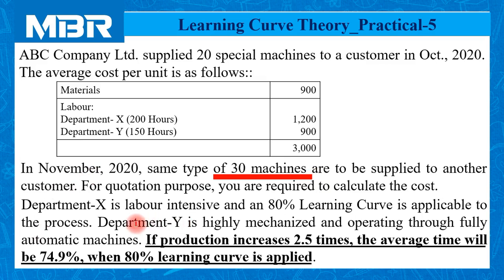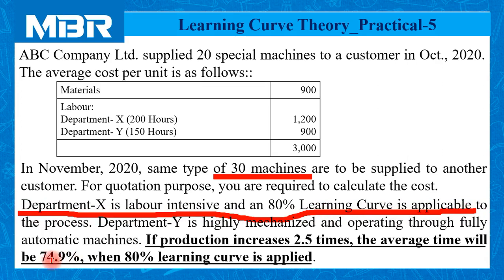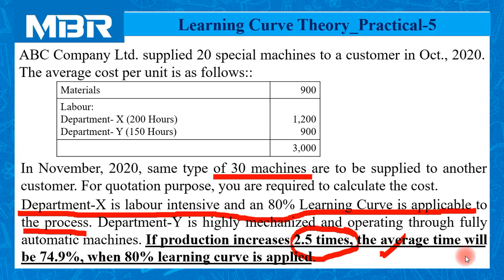Department X is labor intensive and an 80% learning curve is applicable to that process. Department Y is highly mechanized and operates through fully automatic machines. If production increases 2.5 times, the average time will be 74.9% when the 80% learning curve is applied.